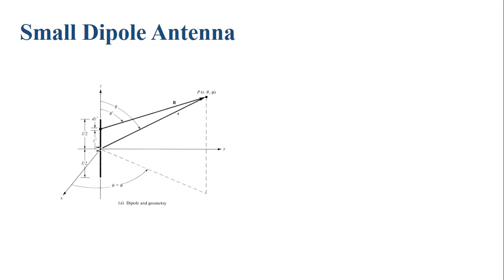For the analysis of this small dipole antenna, the antenna is placed along the z-axis symmetrically. The total length is l, and from the origin it extends l/2 above and l/2 below the origin.